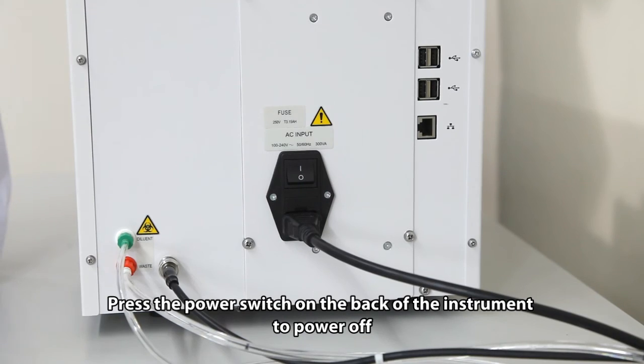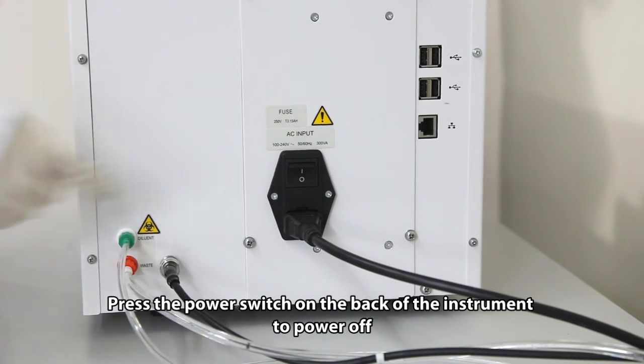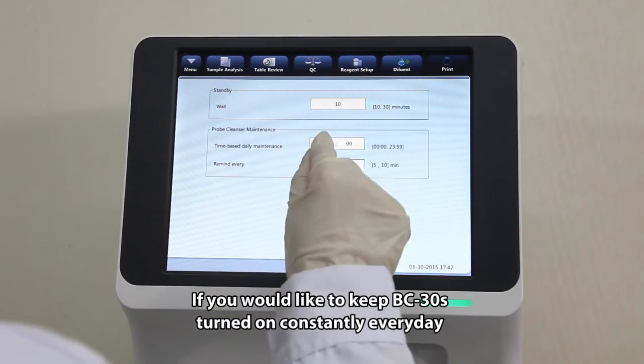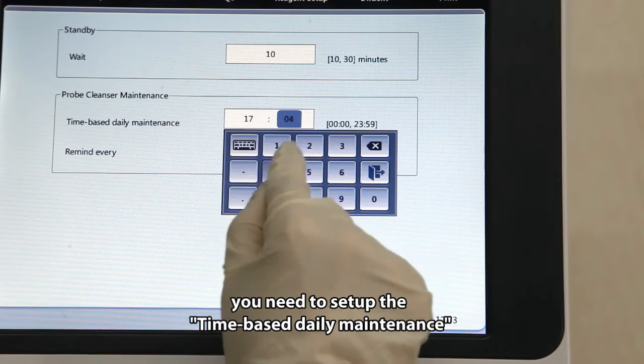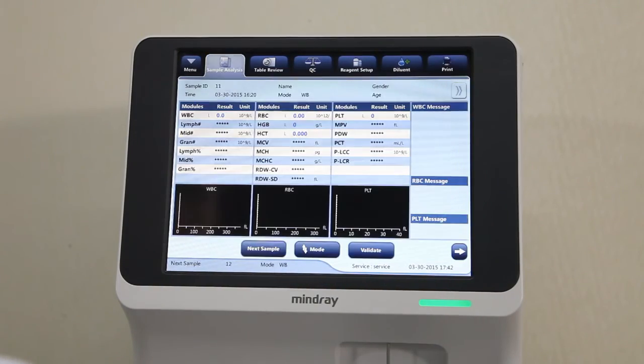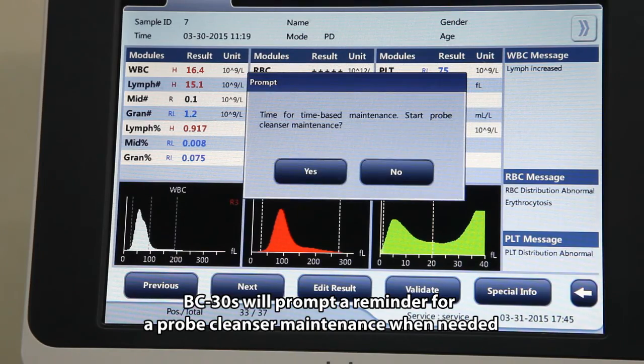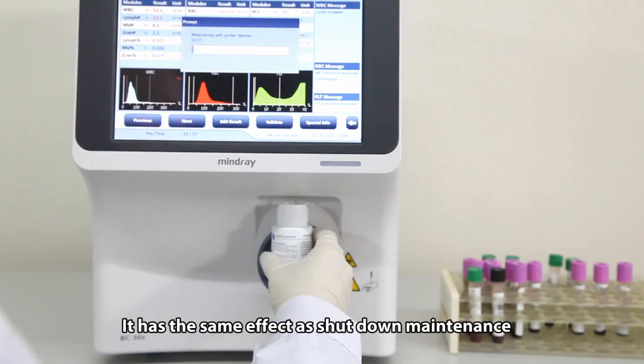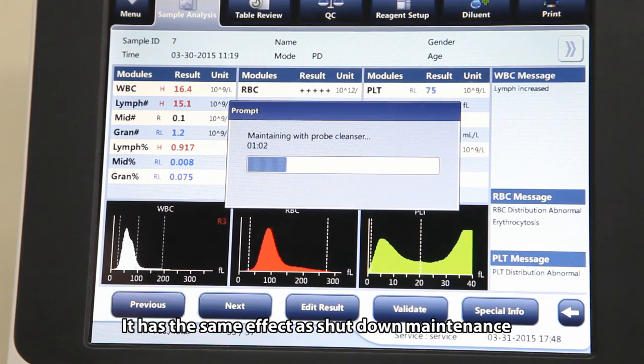If you would like to keep BC-30S turned on constantly every day, you need to set up the time-based daily maintenance. BC-30S will prompt a reminder for probe cleanser maintenance when needed. It has the same effect as shutdown maintenance.